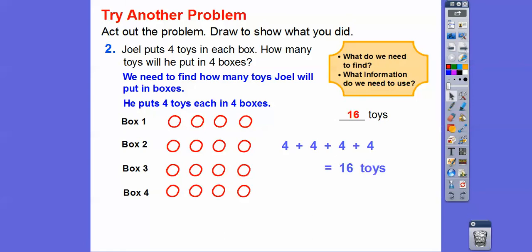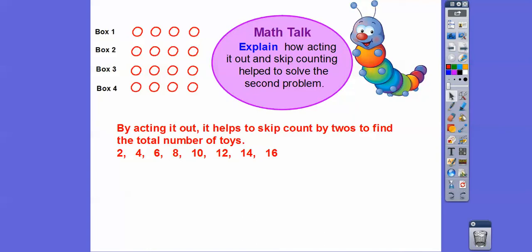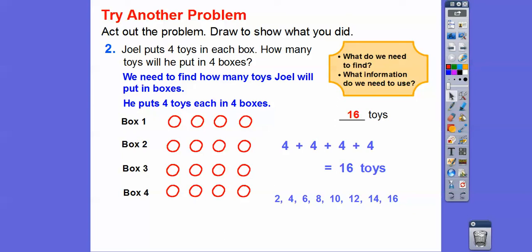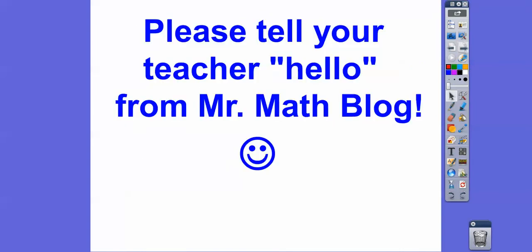If four is hard to count by, you can count by twos: two, four, six, eight, ten, twelve, fourteen, sixteen. Explain how acting it out and skip counting helped us solve that problem. By acting it out, it helped us skip count by twos or by fours: four plus four is eight, plus four is twelve, plus four is sixteen. That's what skip counting is. All right, hope you're doing great — please say hi to your teacher for me. Take care.